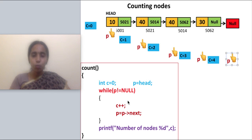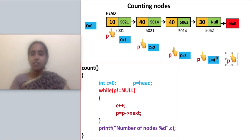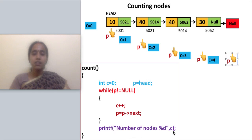Each time through the loop, at the end of the iteration, c will be holding the count. So I can print: the number of nodes is c using the format specifier percent d. This is how I will be counting nodes in a linked list.